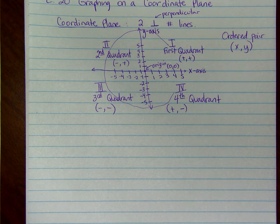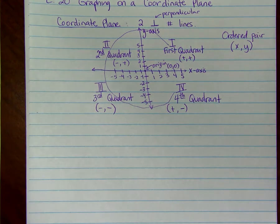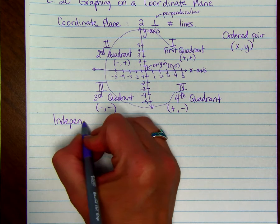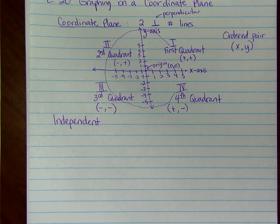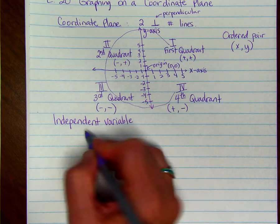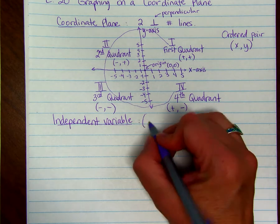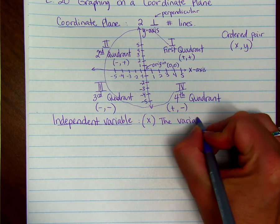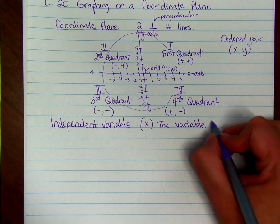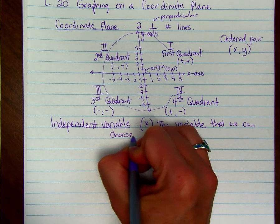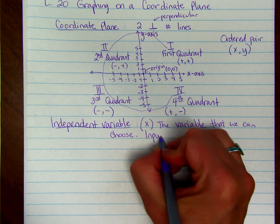Independent variable is usually our x-value. It's the variable that we get to just choose. It's also called the input variable.